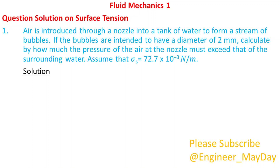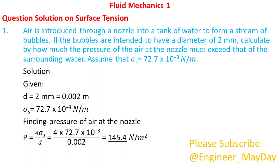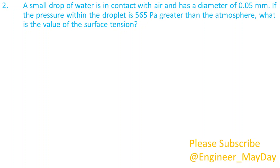Solution. Given: D equals 0.002 meters, surface tension equals 72.7 times 10 to the power negative 3 newtons per meter. Finding pressure of air at the nozzle, which equals 145.4 newtons per square meter.